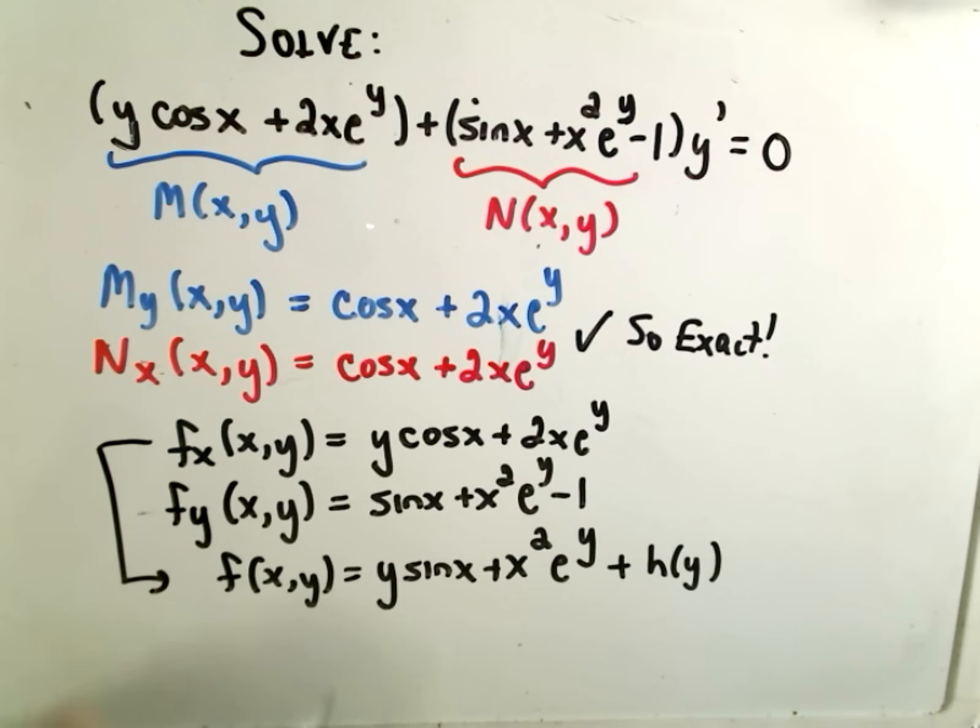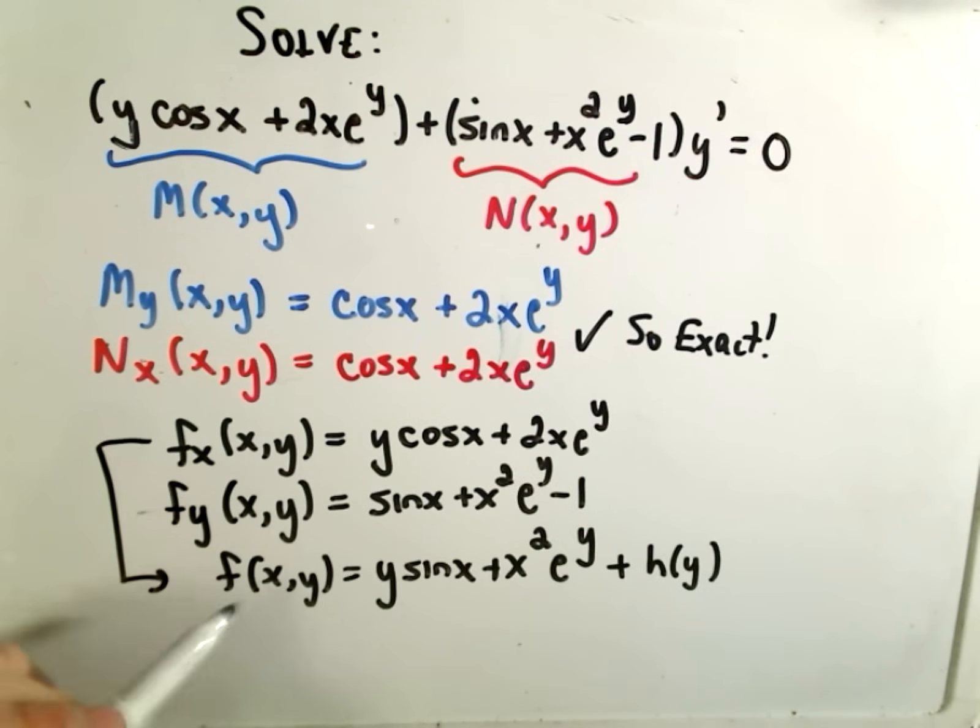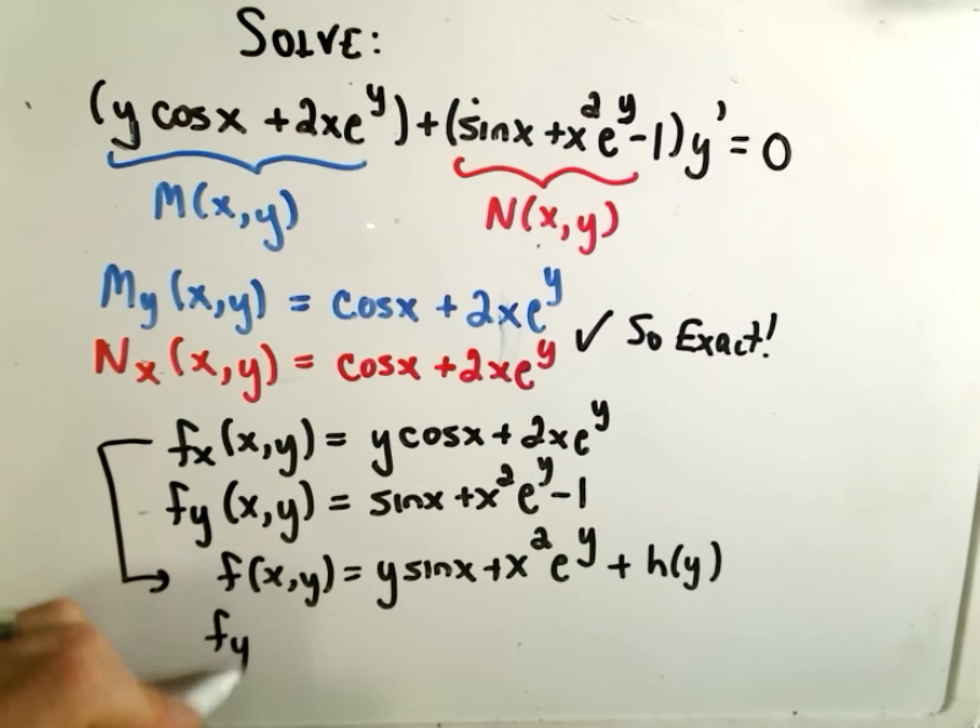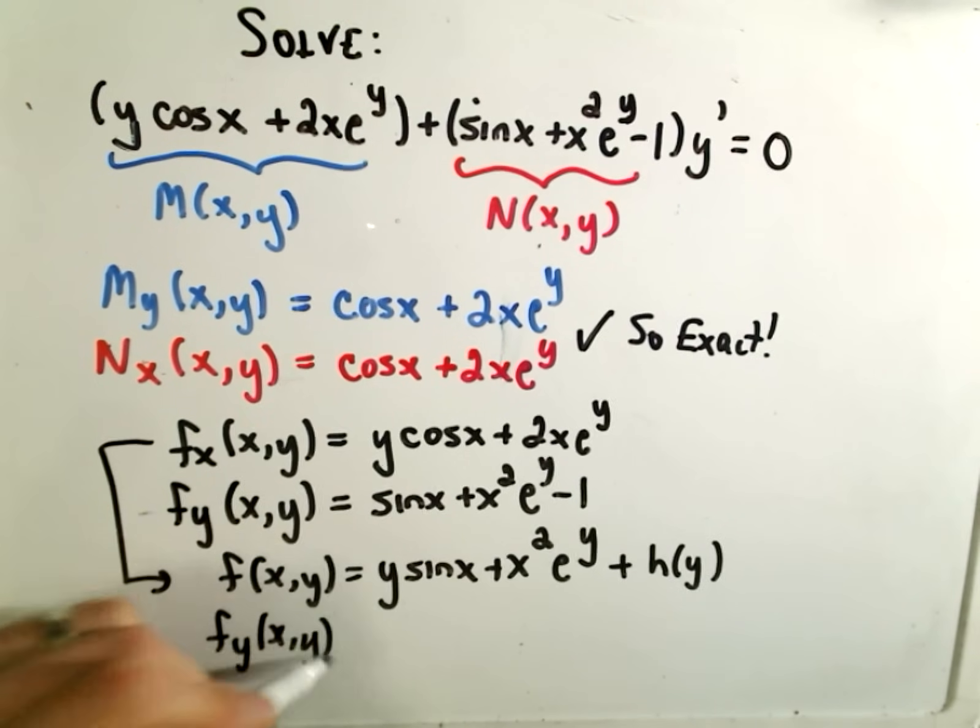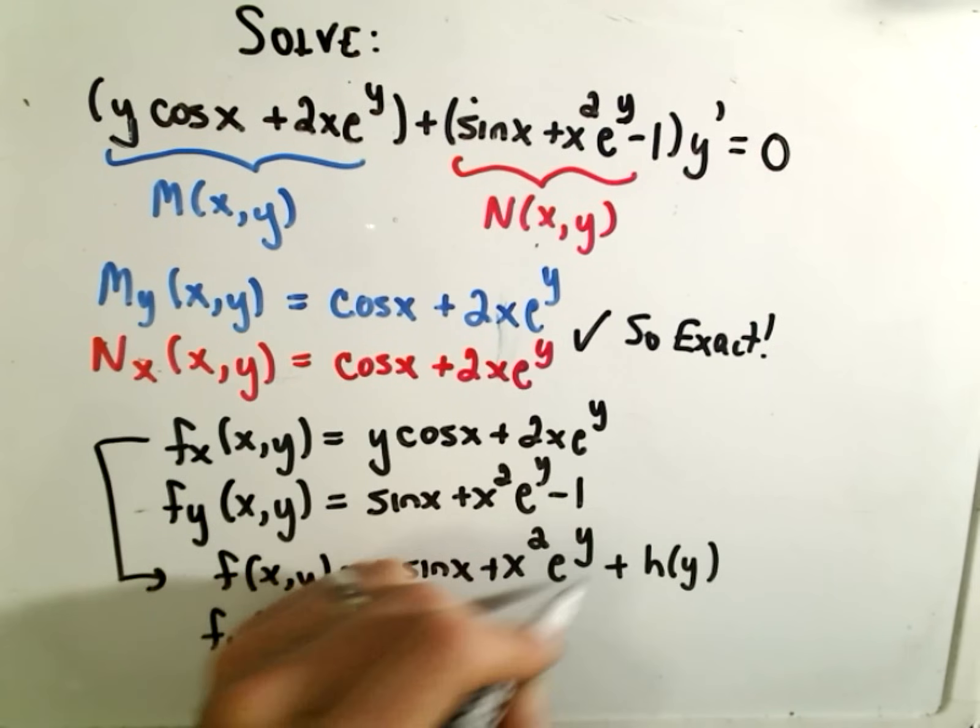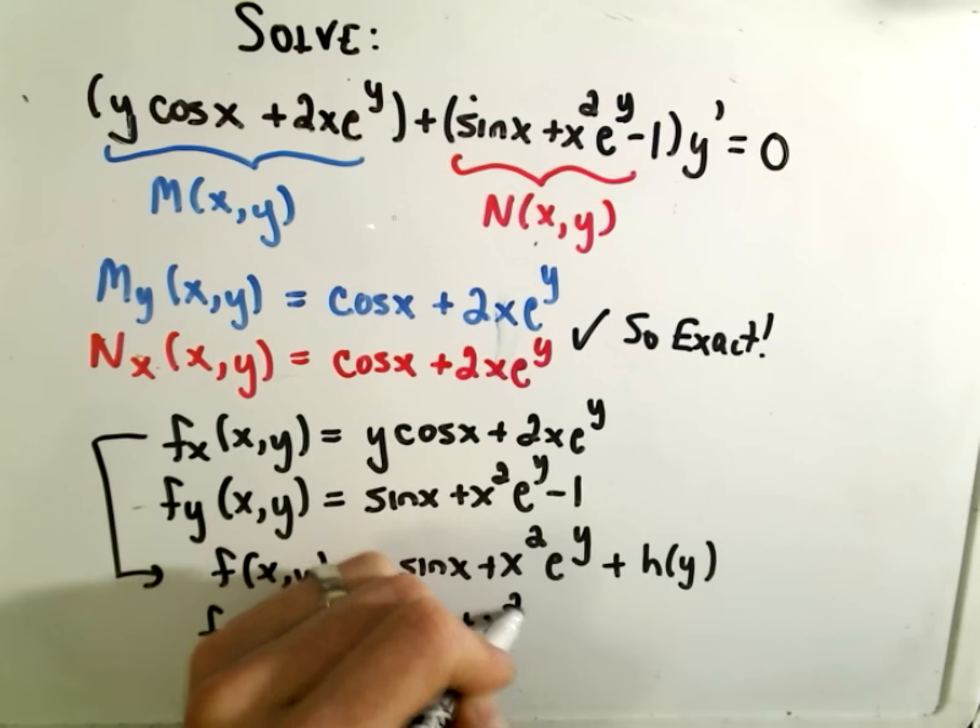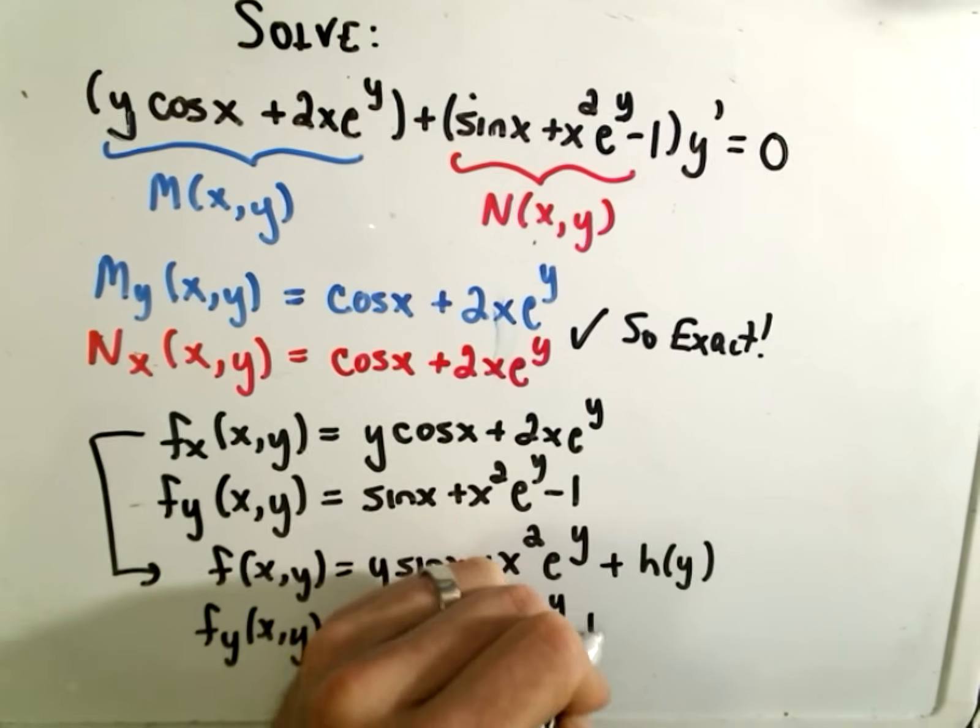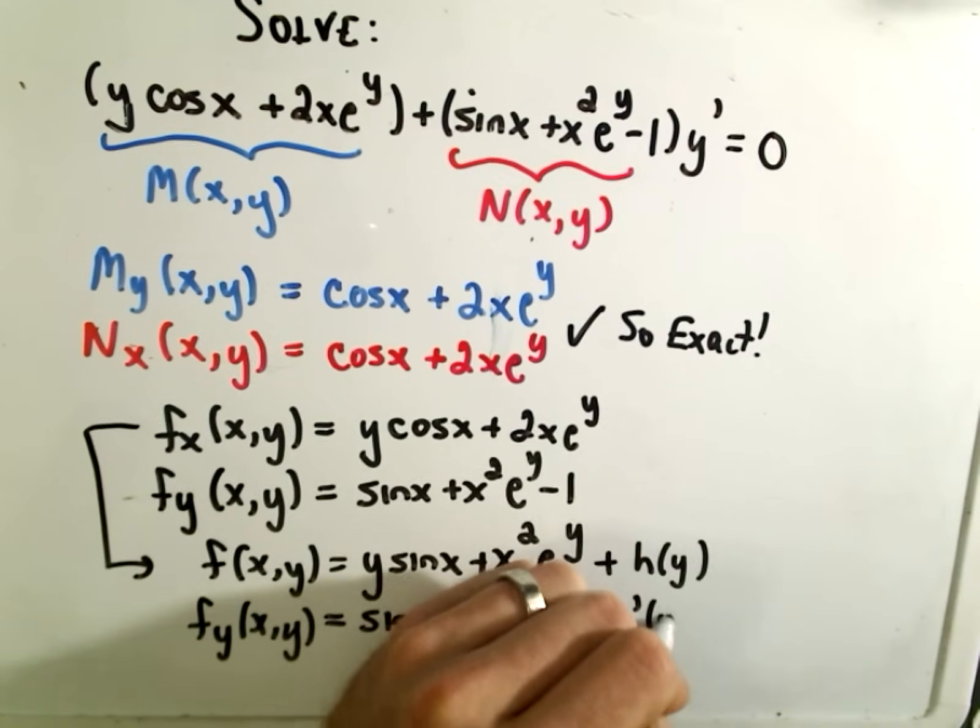Okay, okay, now the next thing we know is if we take the derivative of this with respect to y. Okay, so the derivative with respect to y would be sine x. Again, the derivative of e to the y is just e to the y. Well, then we would get plus h prime of y.